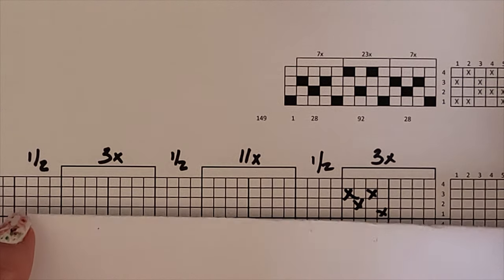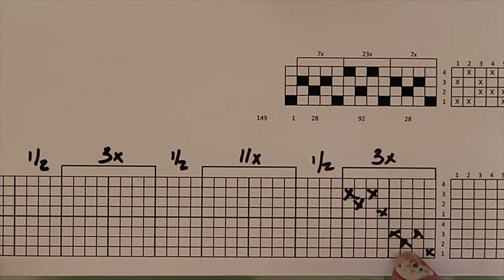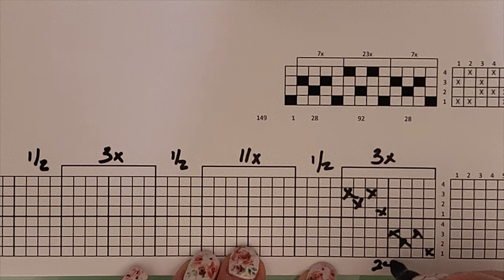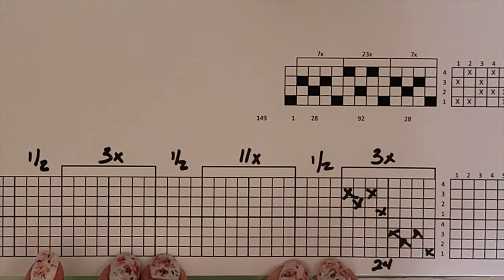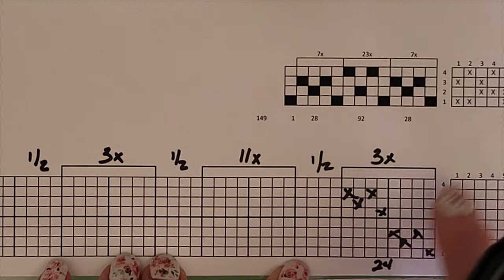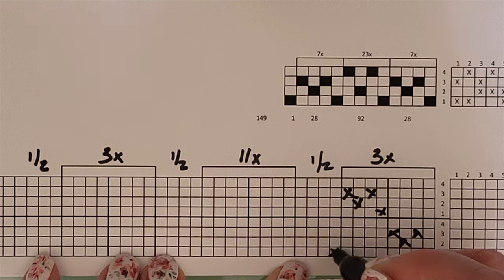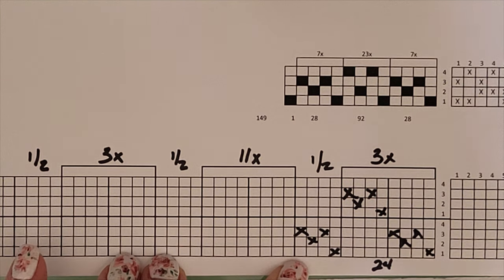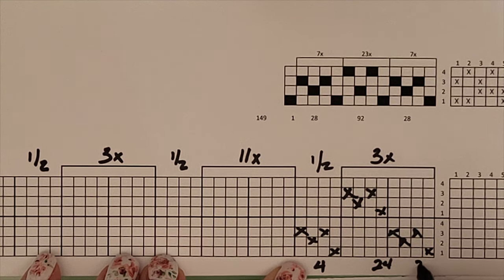Now I have three repeats of eight threads. That's 24 threads. I'm going to do a half a repeat, which is one repeat of these four. One, three, two, three. So there's four threads.